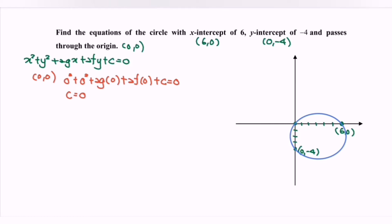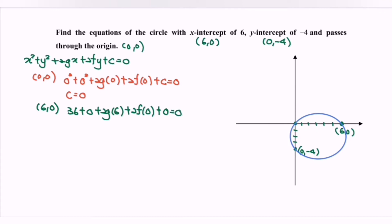Next, substitute the point (6, 0). We will have 36 plus 0 plus 2g times 6 plus 2f times 0 plus c. As we know, c is equal to 0. Simplifying: 36 plus 12g equals to 0. Rearranging: 12g equals negative 36, so g equals negative 3.